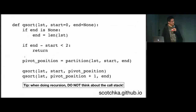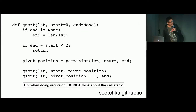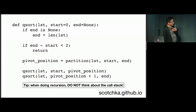So this is a simple Python implementation. The partition function — it doesn't really matter how it's done as long as it tells you what position the pivot ends up at.